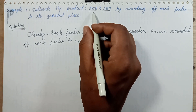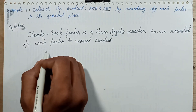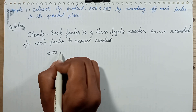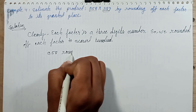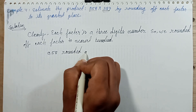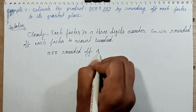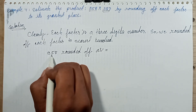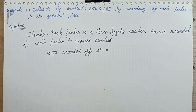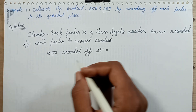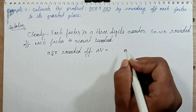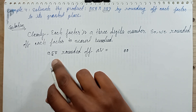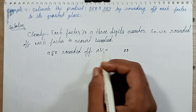First, round nine hundred fifty-eight. The tens digit is five — five is equal to five, so replace the tens place digit with zero. The ones digit is also replaced with zero. Then the hundreds digit increases by one: nine plus one is ten, giving us one thousand.